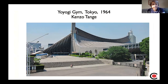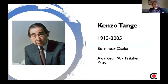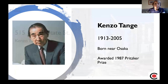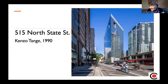Tange died about 16 years ago. He designed buildings on five continents, won the Pritzker Prize — the most prestigious prize given to architects. But there's only one building in Chicago, standing at State and Grand, 515 North State Street — about a 30-story building encased in glass with a 50-foot wedge between floors 24 and 28. Unfortunately, when you walk along the street, you don't really see that cutout wedge, which I think is fairly striking at that intersection.